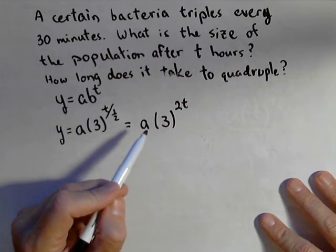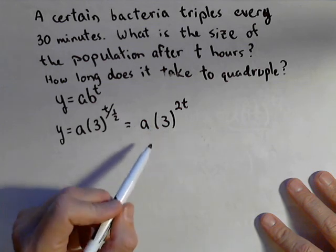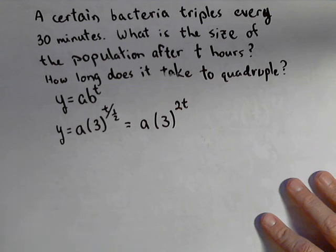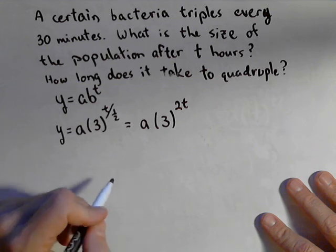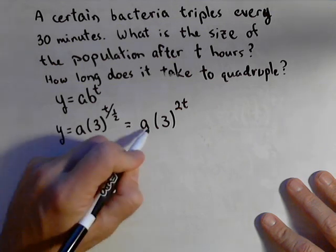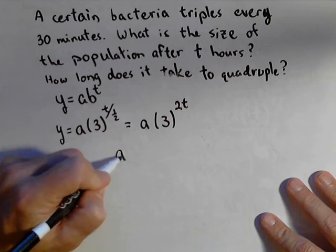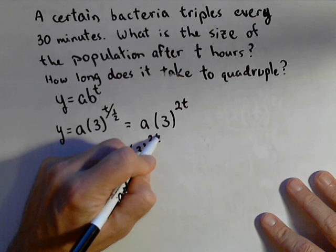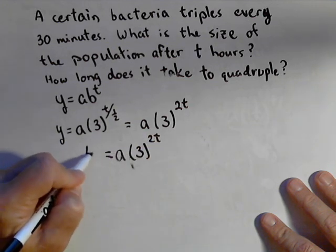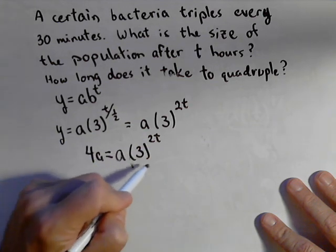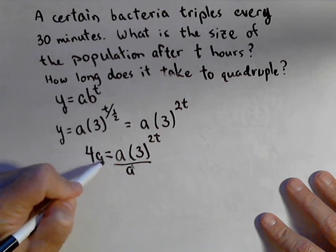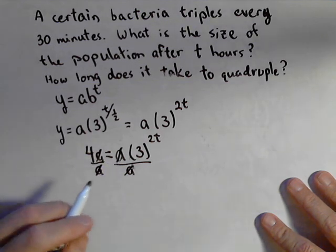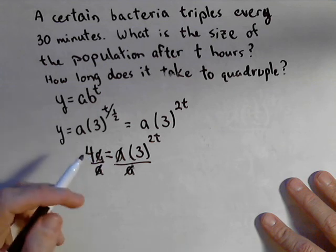Now, if we knew our initial, we could create our model. Our goal is to figure out how long it takes to quadruple. We don't need to know an initial amount to know that. If we start off with a, I want to find out how long it's going to take to get up to 4a. So first I'm going to divide both sides by a, because 4a is quadruple a, and I get something that no longer involves a.